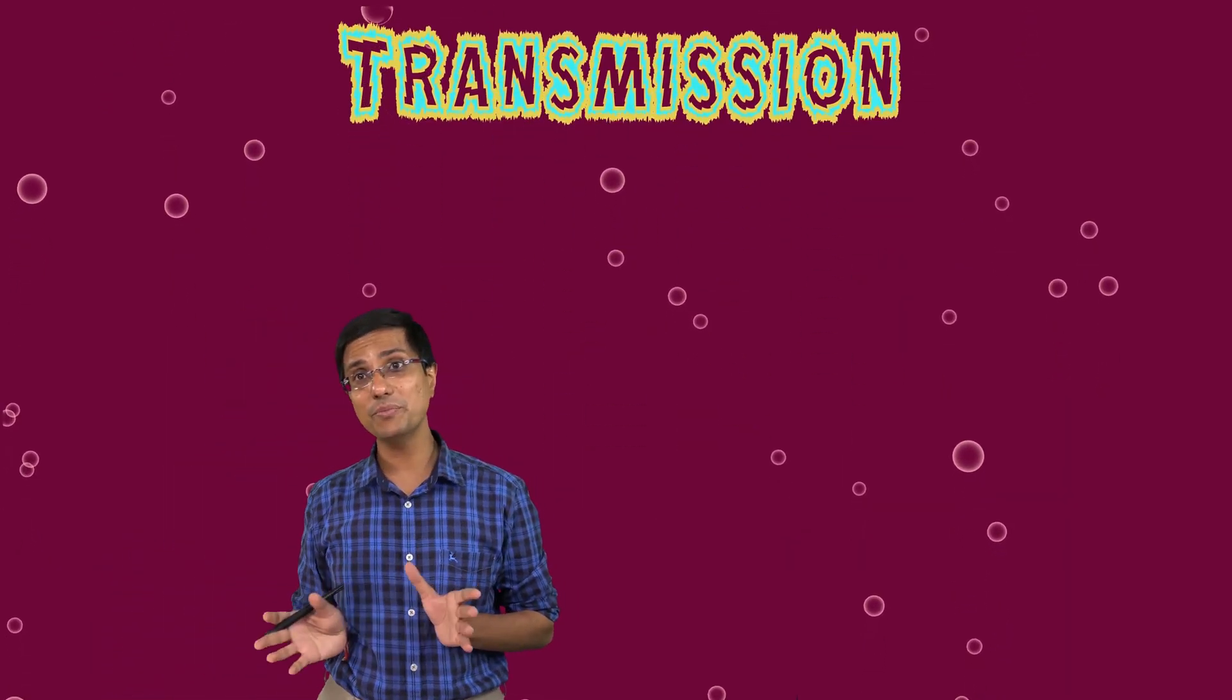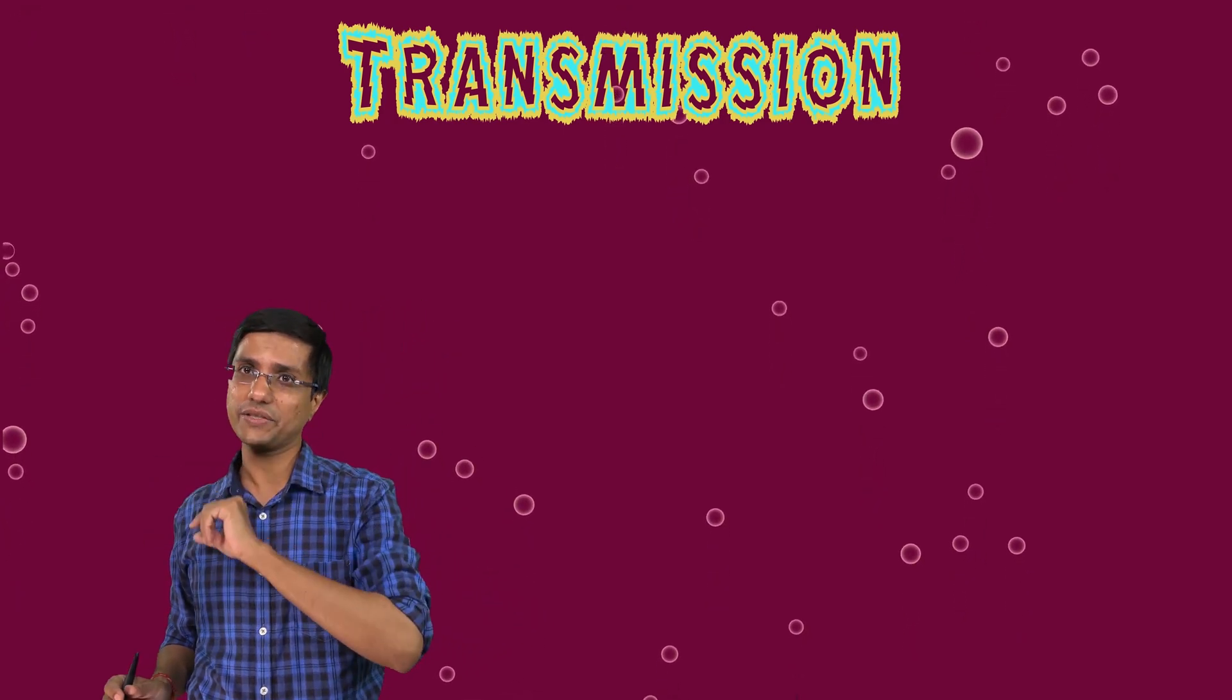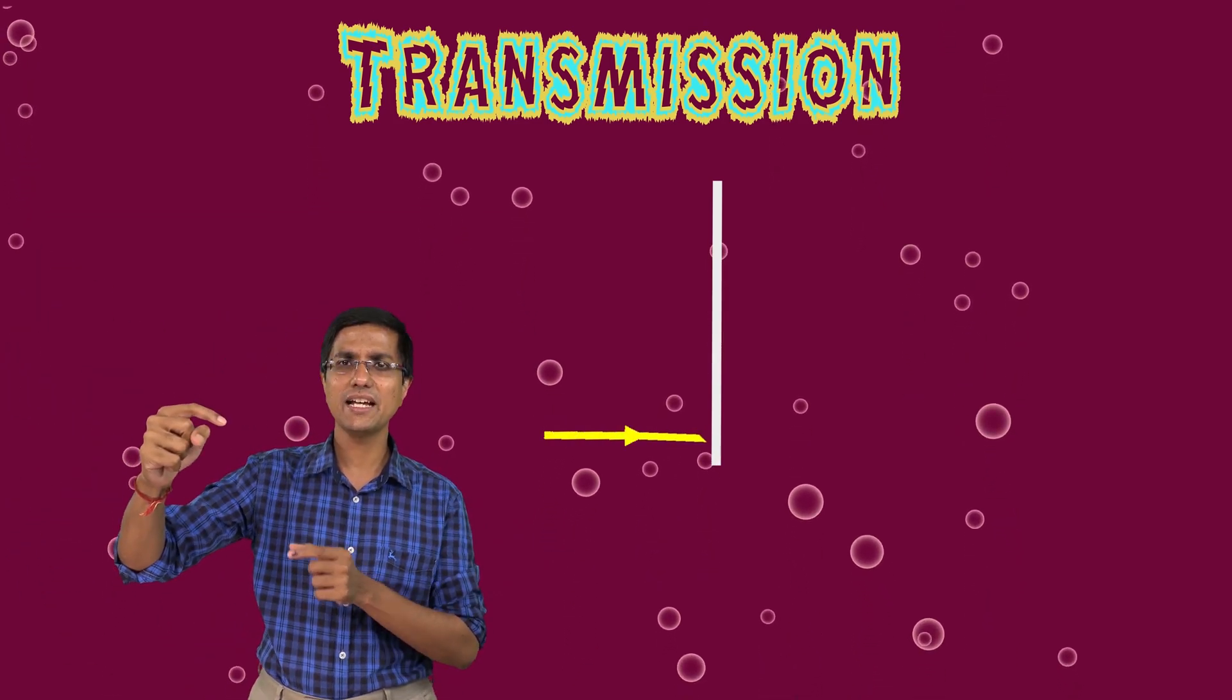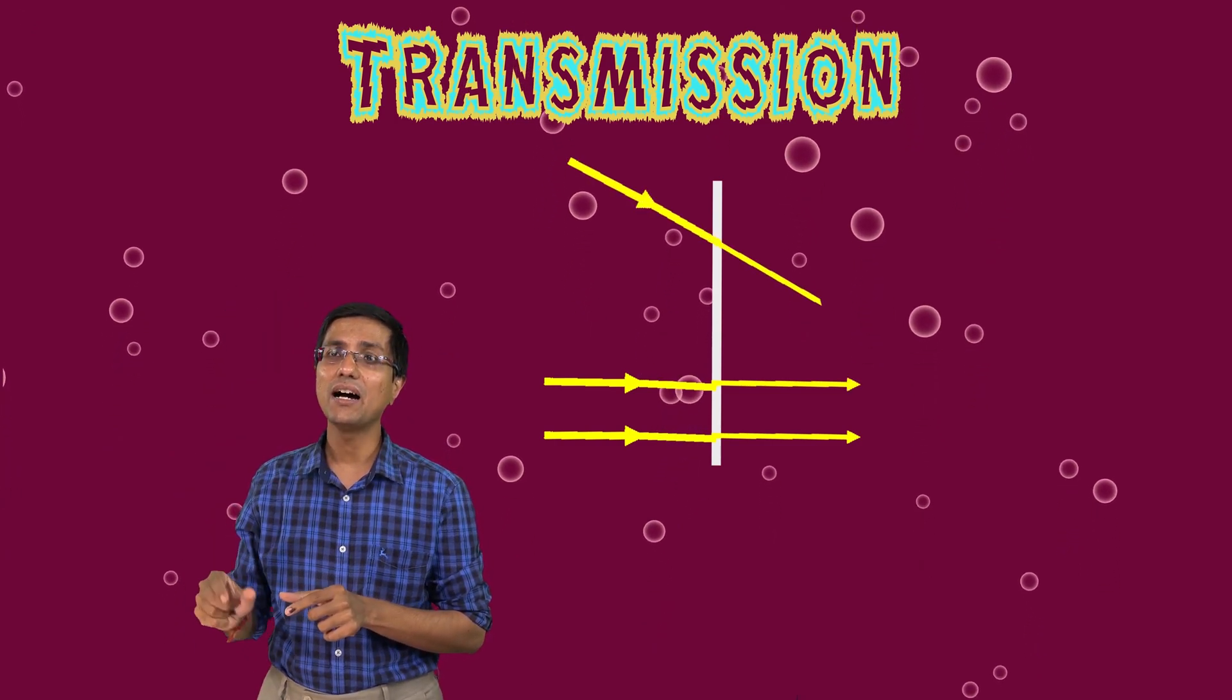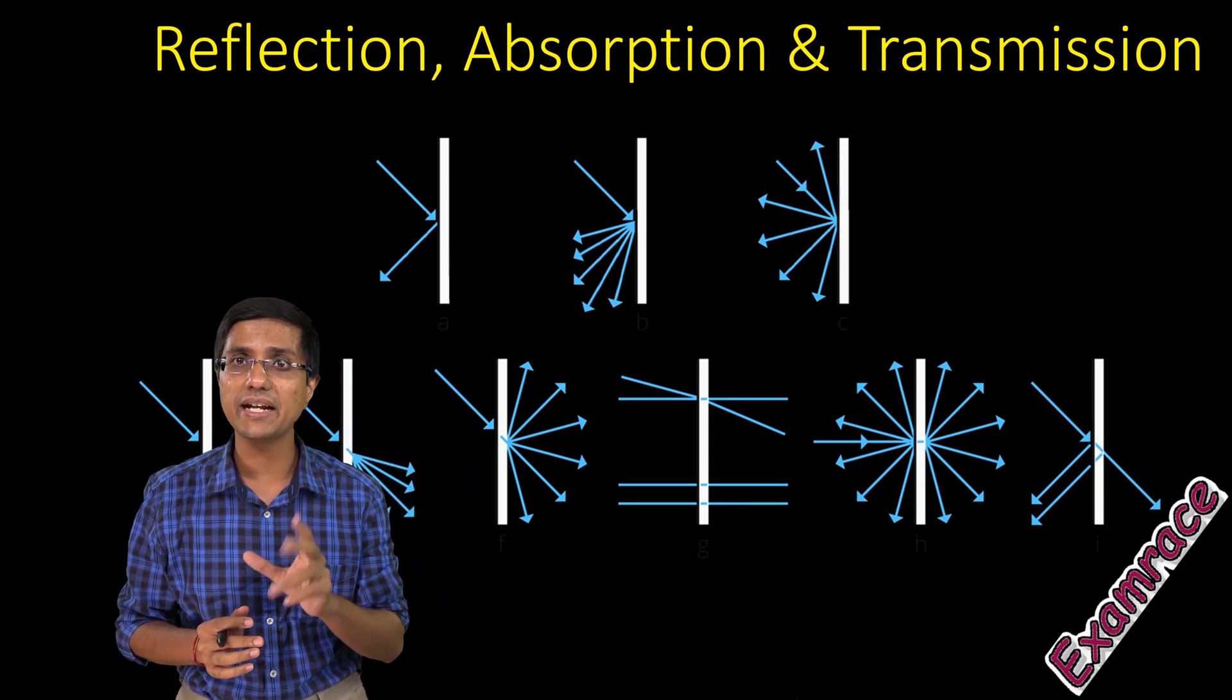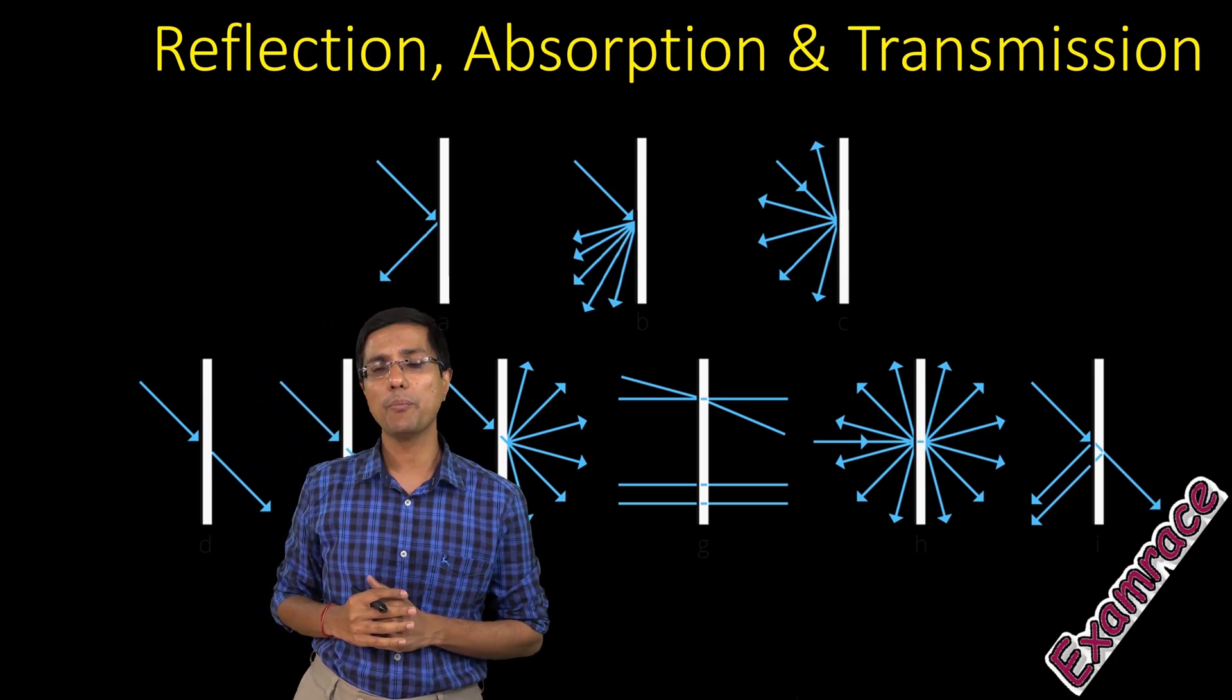The third kind of interaction which can possibly happen is that the object allows the light to pass. So there is a thin sheet of glass that I have here. Light comes in and the glass—not the mirror—the glass allows the light to just pass through. These kinds of objects which allow the light to pass through are known as transparent. So the glass is transparent. I can see through it because it allows the light to pass through.